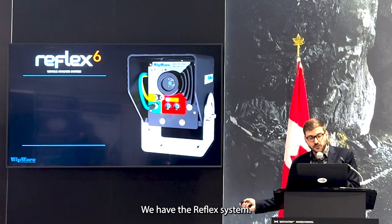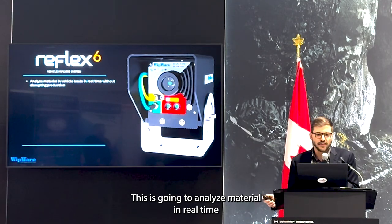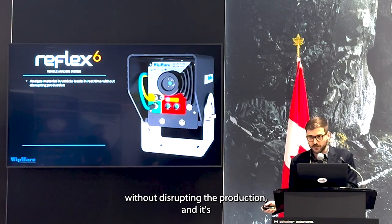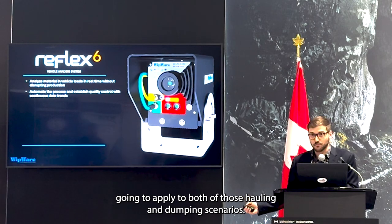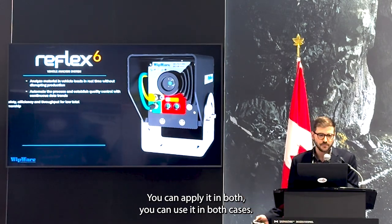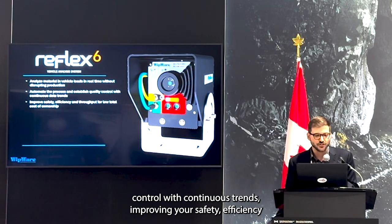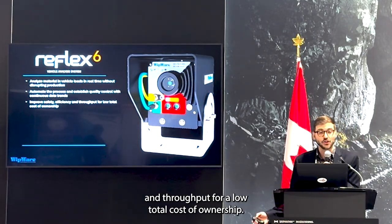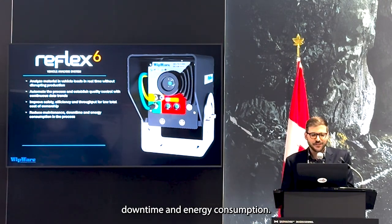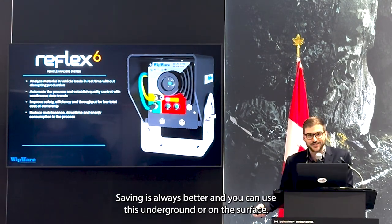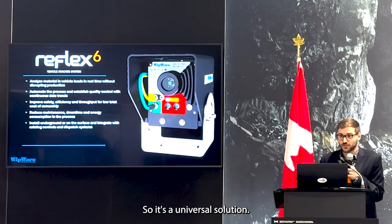So this is what our solution is — we have the Reflex system. This is going to analyze material in real time without disrupting production, and it applies to both hauling and dumping scenarios. You can automate that process, establish quality control with continuous trends. You're improving safety, efficiency, and throughput for low total cost of ownership. You're going to reduce maintenance, downtime, and energy consumption. And you can use this underground or on the surface, so it's a universal solution.